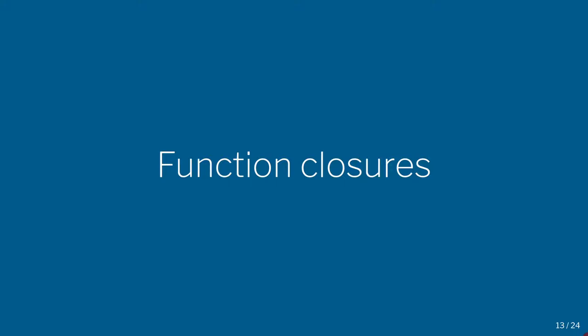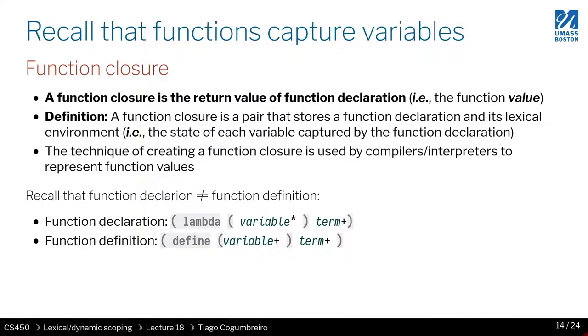Function closures, function values, and dynamically created functions all mean the same thing. When you create a function dynamically, it retains a certain internal state. We saw that in homework 2 with the example of functions as data structures, where we store the state of a counter. This works because when we return a lambda, it may capture parameters defined outside of it.